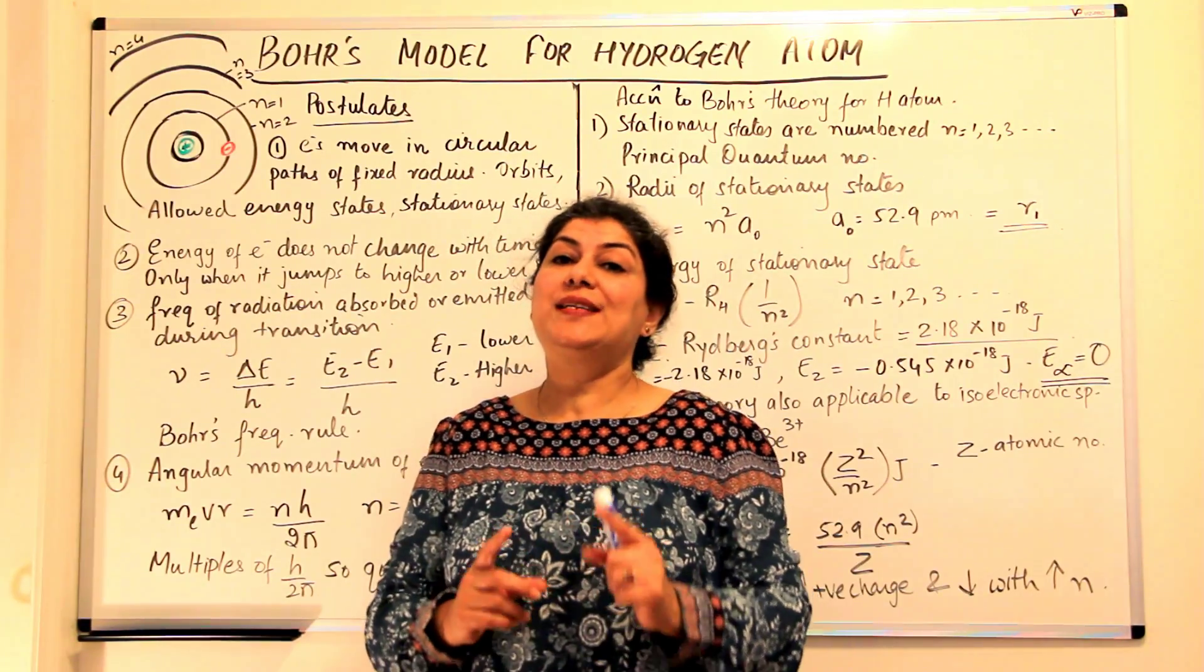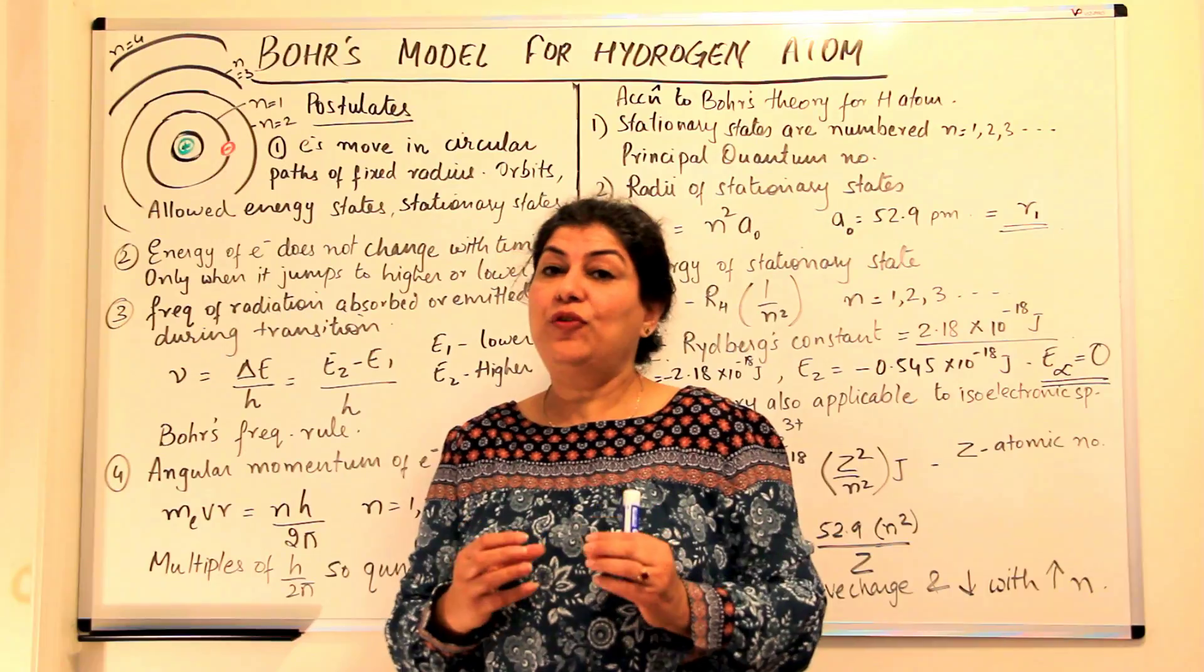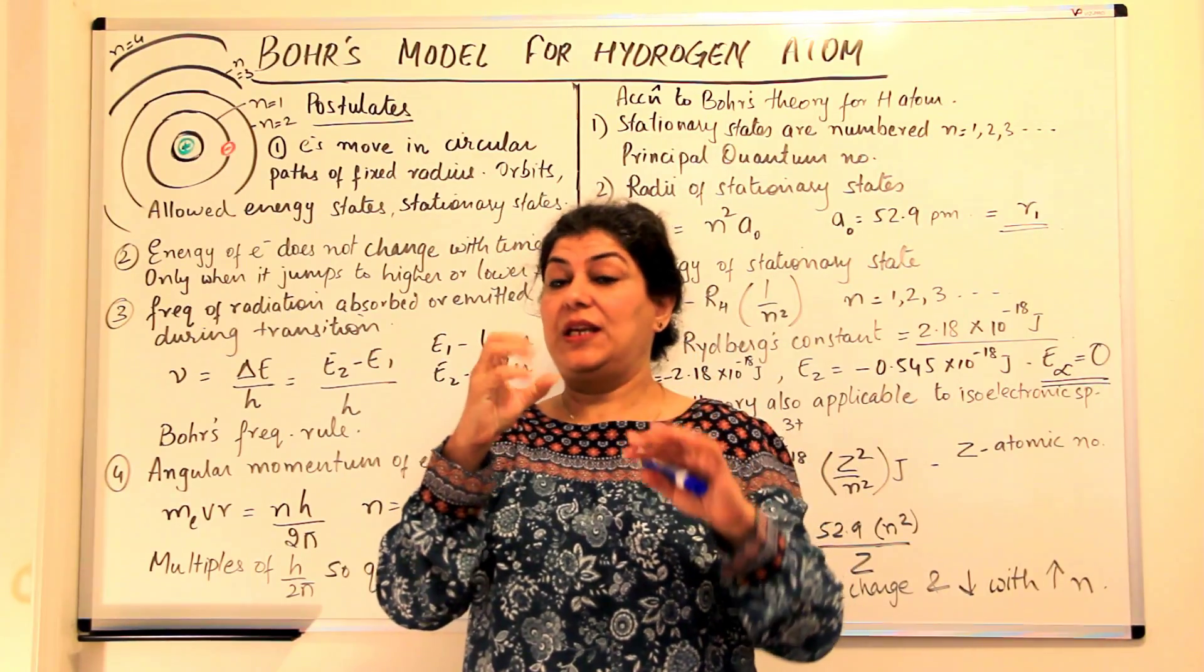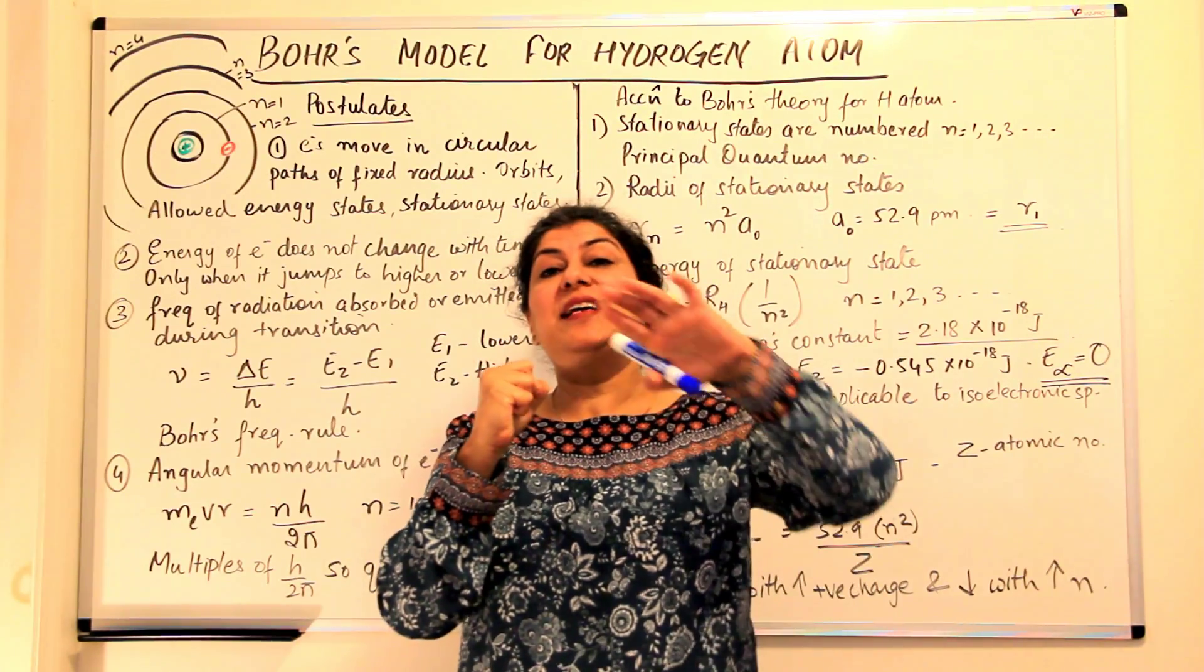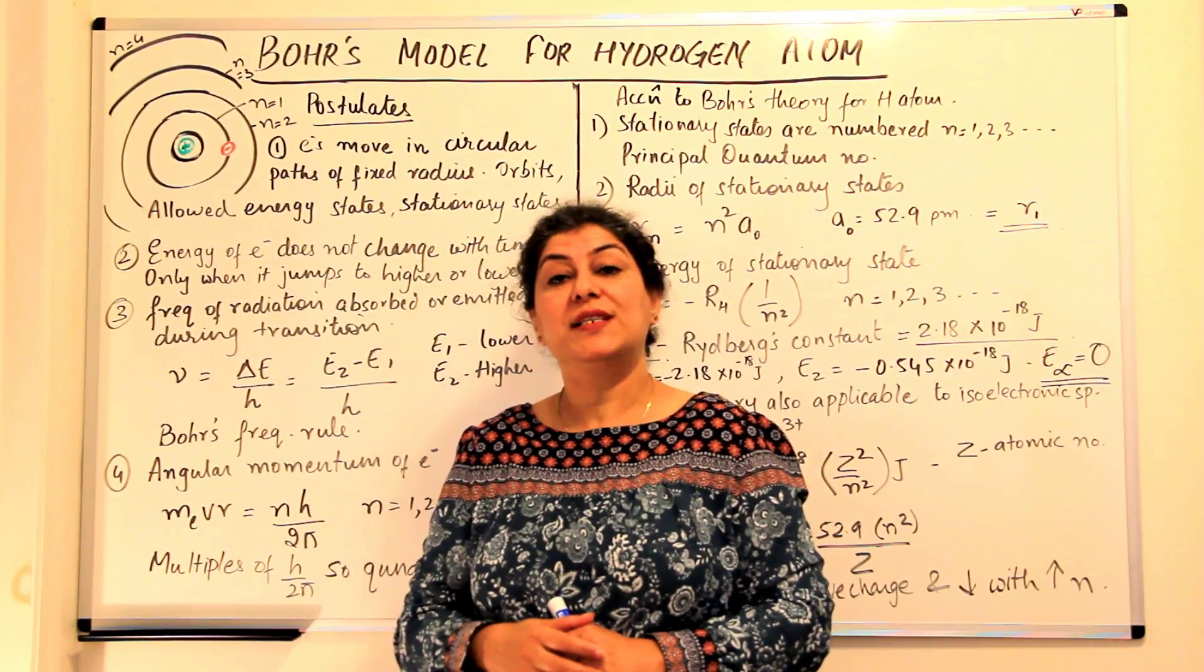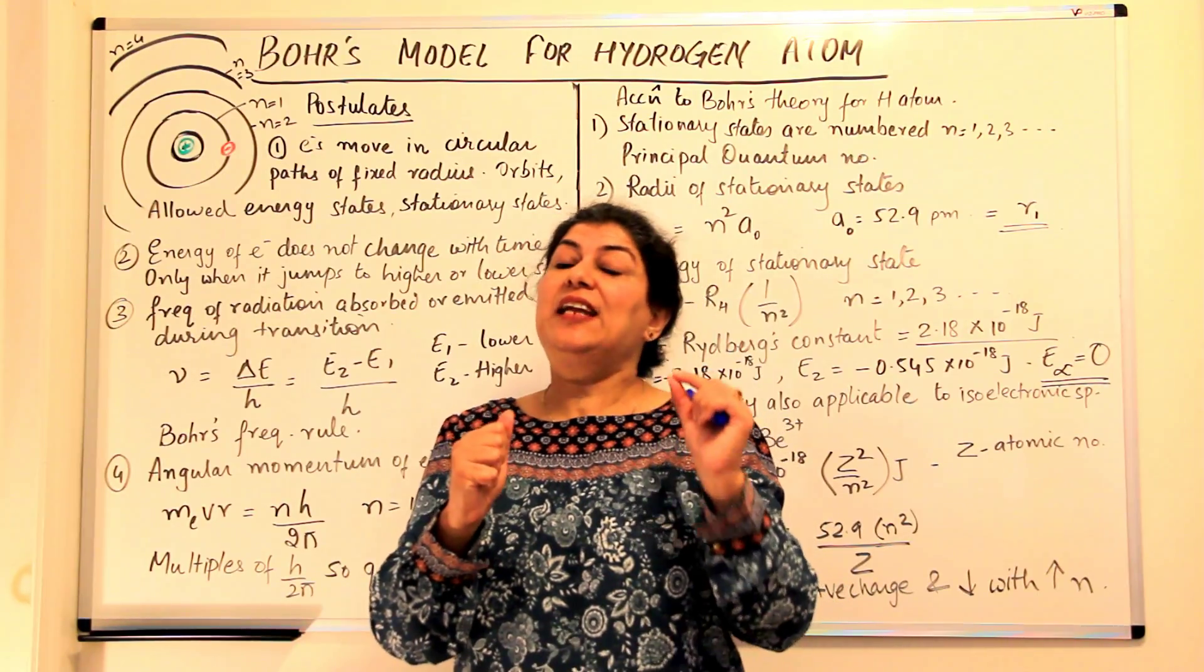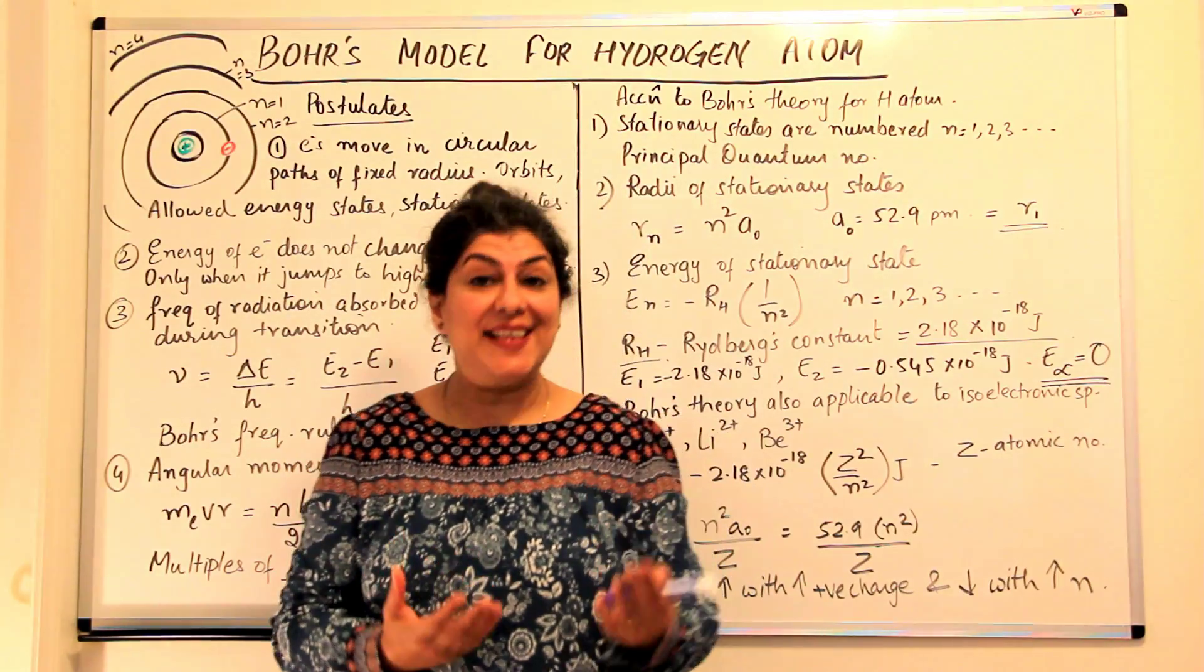In the previous videos, we discussed the drawbacks of Rutherford's model. Rutherford had assumed that there is a nucleus and established the presence of a nucleus, but he assumed that the electrons simply revolve around the nucleus. But the problem with this model was that if electrons revolve around the nucleus, electrons are charged particles and when charged particles accelerate, they are known to lose energy.